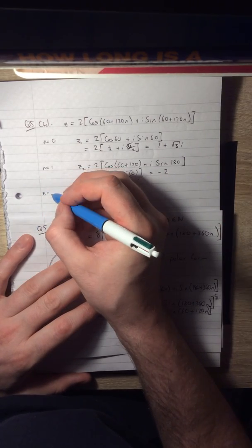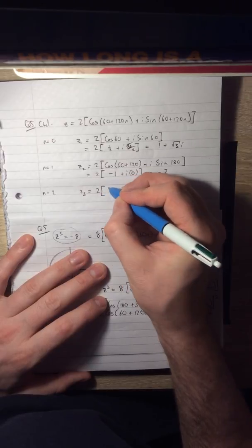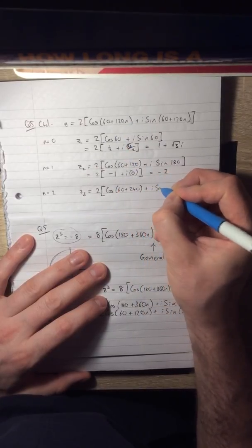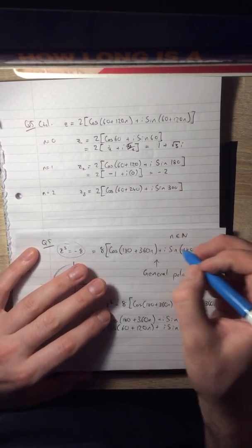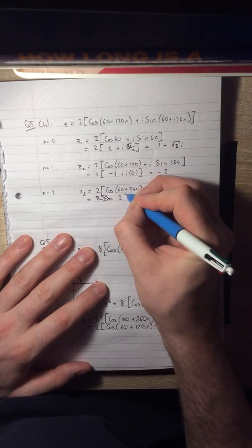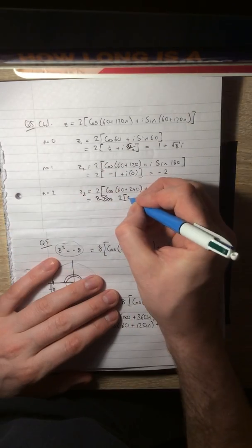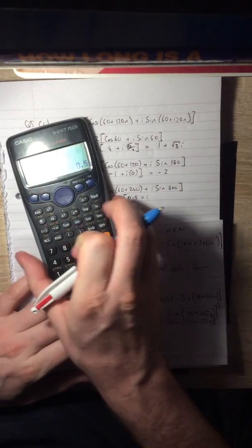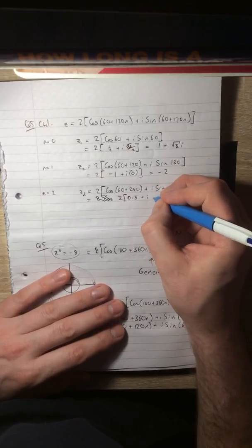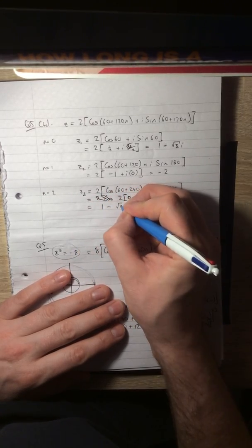And our third one, when n equals 2, our third root will be 2 cos(60 + 240), which is 300 altogether, plus i sine. So that's going to be 2 times cos 300, which is 0.5, plus i times the sine of 300 is -√3/2. Multiply that by 2, and you get yourself 1 - √3i.